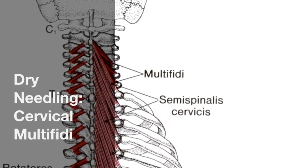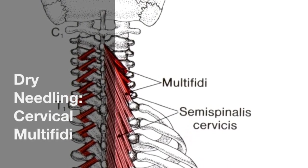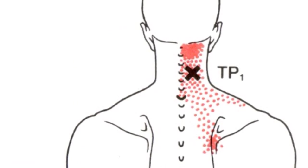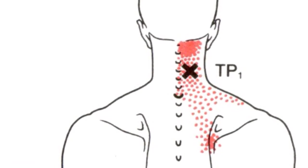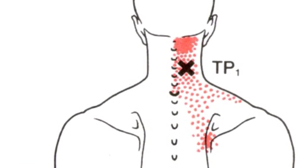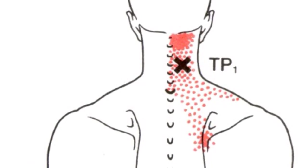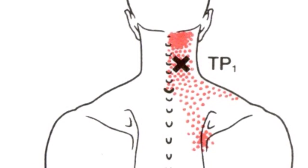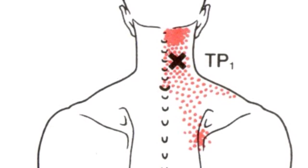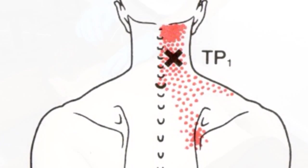This video looks at the dry needling of the multifidi in the cervical region. Innervated by the primary posterior rami at each of the spinal levels, referred pain may be felt from multifidi or rotatores in the suboccipital region at or around the facet joints, the upper trapezius and the interscapular area.